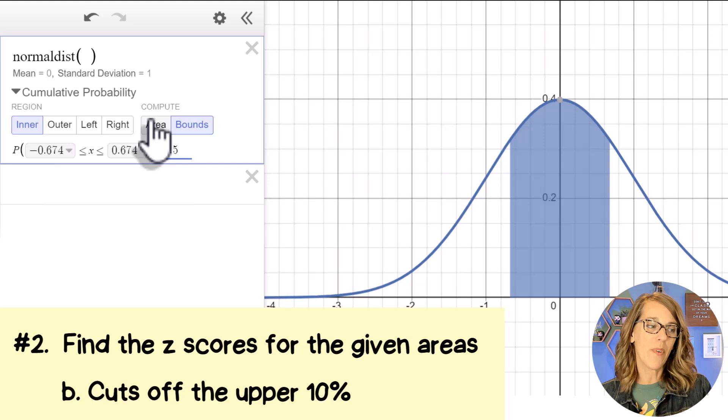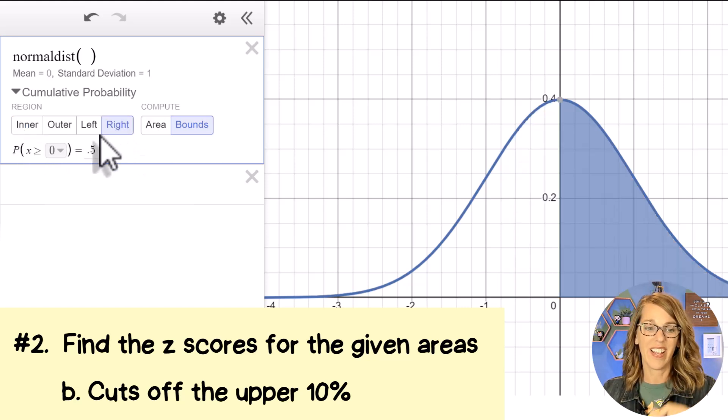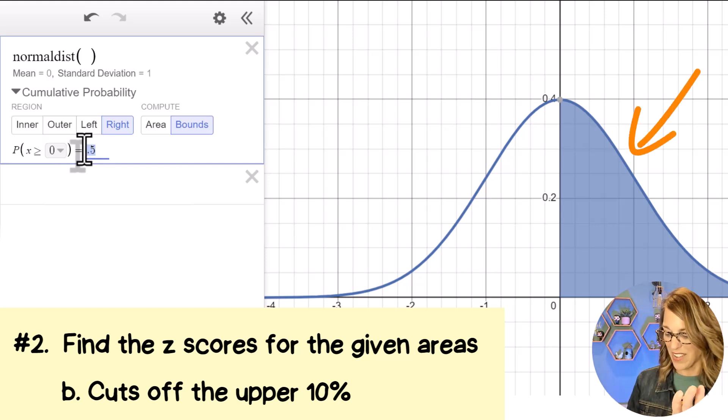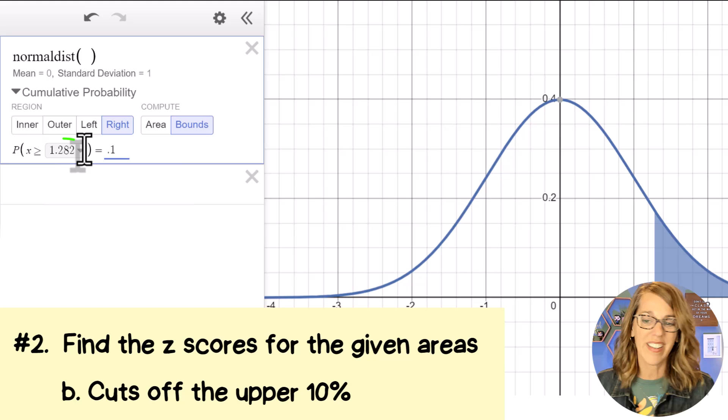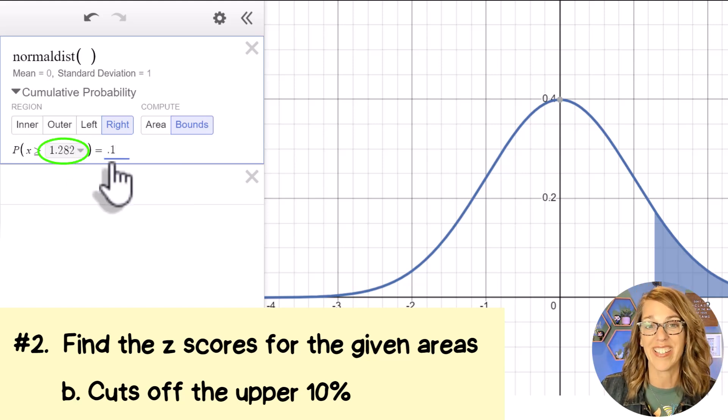Okay, part B. Part B wants an upper 10%. So that's not going to be an inner area. Instead, that's going to be the right area. So I click on right, and I want the upper 10%. This is the upper 50% because I still have 0.5. 10% would be 0.1. And I get a z score of 1.282.